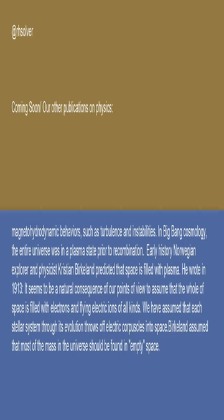Early history: Norwegian explorer and physicist Christian Birkeland predicted that space is filled with plasma. He wrote in 1913: "It seems to be a natural consequence of our points of view to assume that the whole of space is filled with electrons and flying electric ions of all kinds. We have assumed that each stellar system, through its evolution, throws off electric corpuscles into space." Birkeland assumed that most of the mass in the universe should be found in empty space.